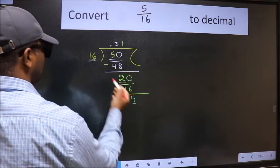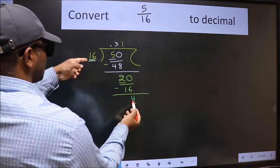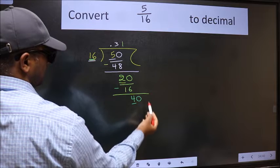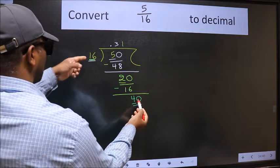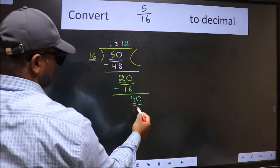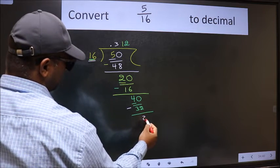Now here we have 4 and here 16. 4 is smaller than 16, and we already have the decimal. So directly we can take 0. So, 40. A number close to 40 in 16 table is 16 twos, 32. Now we should subtract. We get 8.